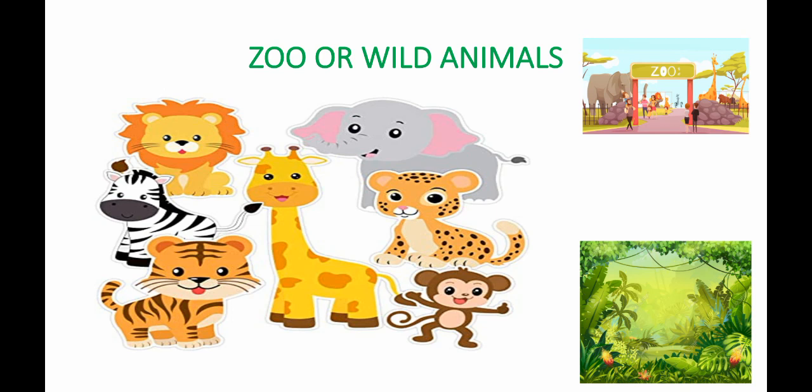zebra, tiger, giraffe, monkey, and elephant. Those animals live in the zoo and they are in an exhibition, or they can live in a jungle.